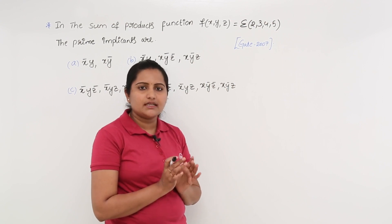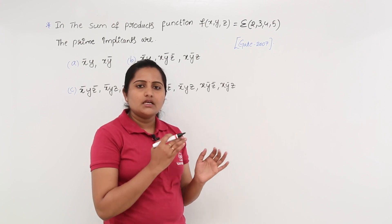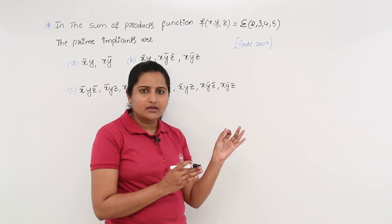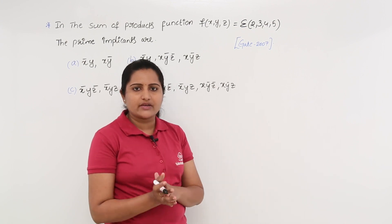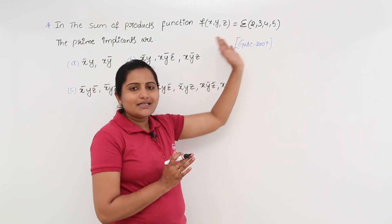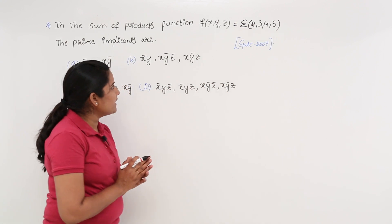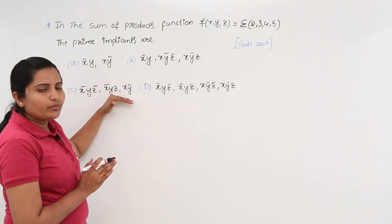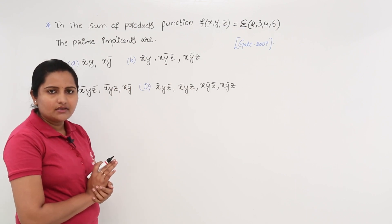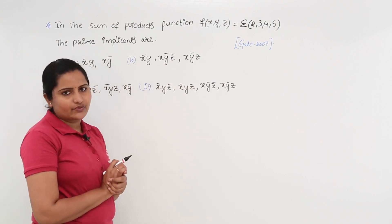For 3 variables, the number of minterms is 2³, which is 8. That means minterms range from 0 to 7. That is why I am considering a 3-variable K map now. Those 3 variables need to map with the options — here they are given as X, Y, Z — so definitely you need to consider those 3 variables as X, Y, Z.